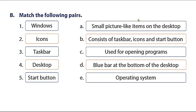Now we have matching questions — draw a line to each word. We have: Windows, Icons, Taskbar, Desktop, and Start Button. Let's read the clues. First: small pictures — the small pictures we can see as items on the desktop. What are the small pictures? The icons. Small pictures mean icons.